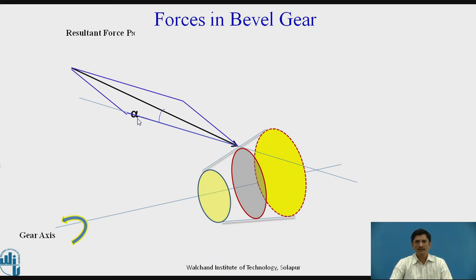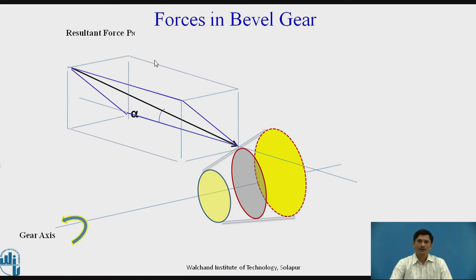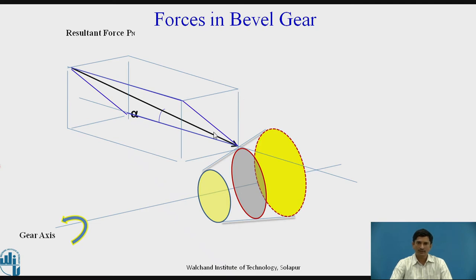Pn is always inclined at an angle alpha, which is equal to the pressure angle. This is the box where we need to analyze the forces. One line must be parallel to the axis of rotation, one line must be perpendicular to the axis of rotation, and the third line must also be perpendicular to the axis at the pitch point.